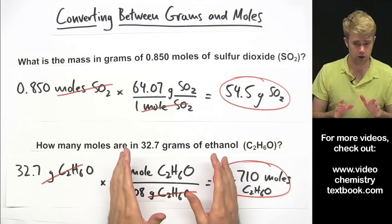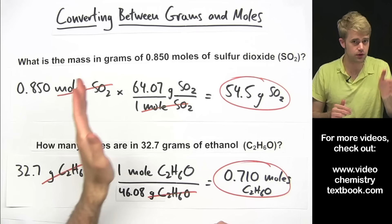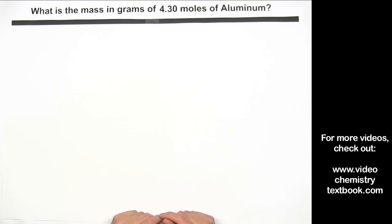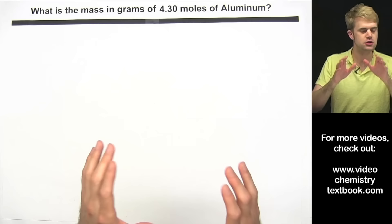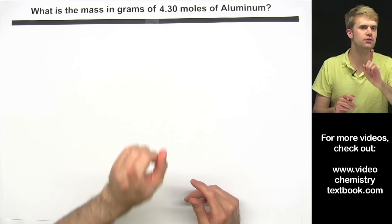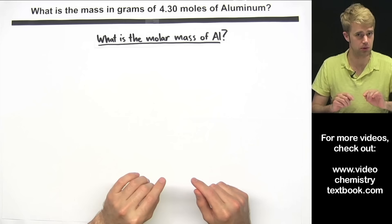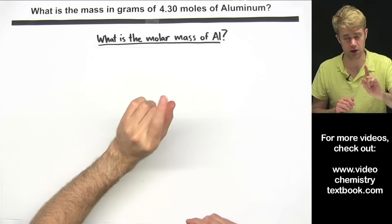In this video we're going to learn how to solve problems where we have to convert back and forth between grams and moles. The first problem: what is the mass in grams of 4.30 moles of aluminum? Since we're talking about grams and moles, the first thing we want to ask is: what is the molar mass of aluminum?